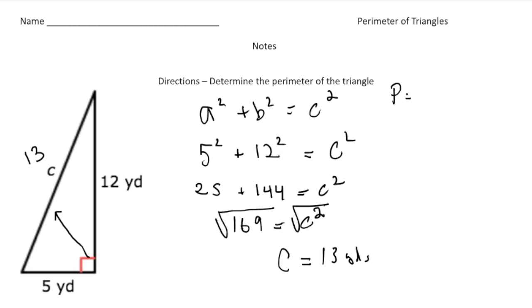So to find the perimeter, we're going to add 13 plus 12 and then plus 5. And 13 plus 12 is 25 plus 5 more is 30. So the perimeter is going to be 30 yards.